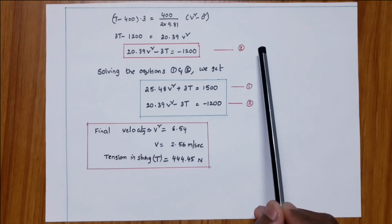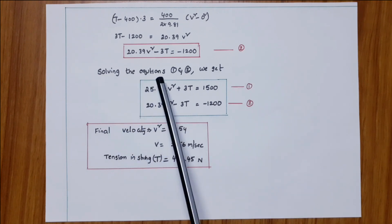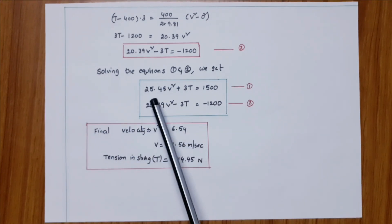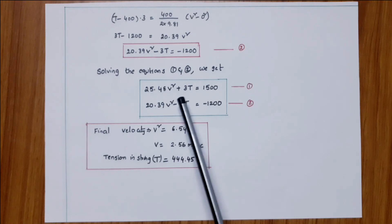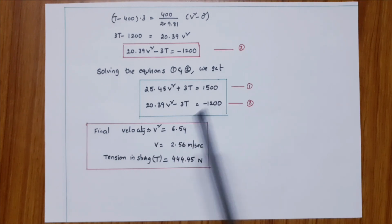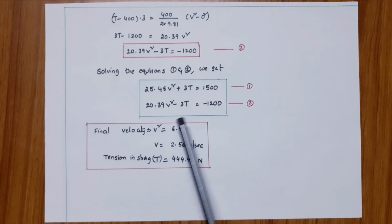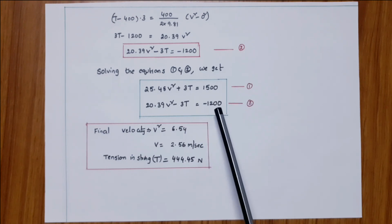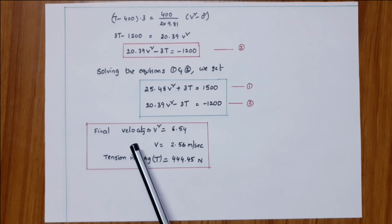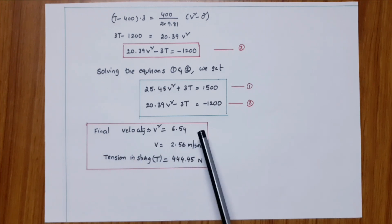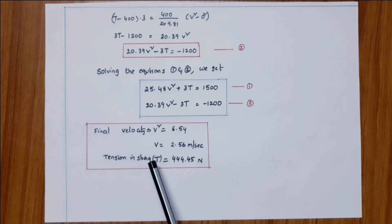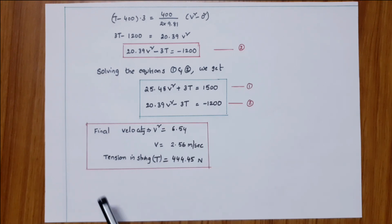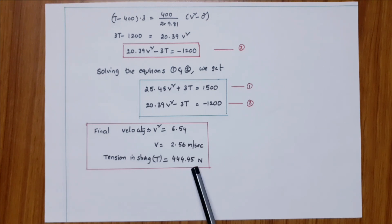Solving equations one and two simultaneously: 25.48 v squared plus 3T equals 1500 and 20.39 v squared minus 3T equals minus 1200. Adding both equations gives v squared equals 6.54, so final velocity v equals 2.56 meters per second. Substituting back, tension in the string T equals 444.45 newtons.